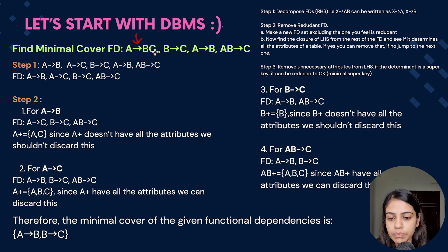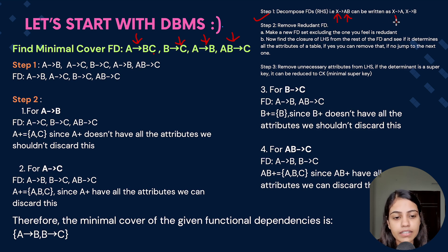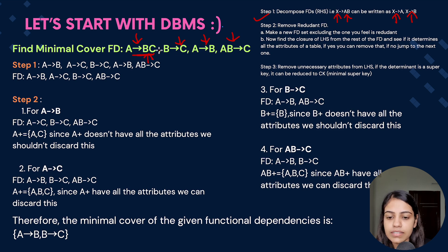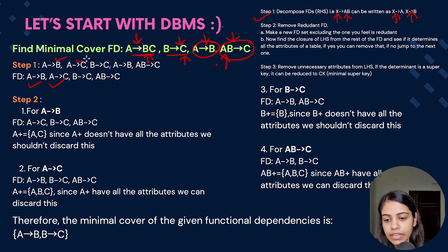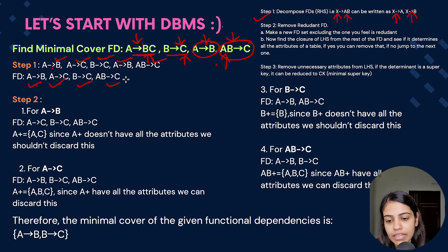Let's understand from an example. We have to find the minimal cover of: A determines BC, B determines C, A determines B, and AB determines C. Step one is to decompose the RHS. A determines BC becomes A determines B and A determines C. The other dependencies have single attributes on the RHS so they stay. We also notice A determines B appears twice, so the duplicate is removed. The resulting set is: A determines B, A determines C, B determines C, and AB determines C.